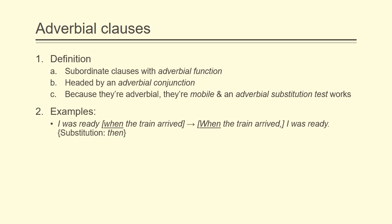Now, in the sentence 'I was ready when the train arrived,' we can also reverse the order of those two elements, putting the subordinate clause first. So that will become: 'When the train arrived, I was ready.' So we can reverse the order, and if the adverbial clause comes at the beginning, we just add a comma. Also note that an adverb substitution test is going to work. So I can substitute a typical adverb of time — namely 'then' — for the whole clause. So 'I was ready then,' or 'then I was ready.'